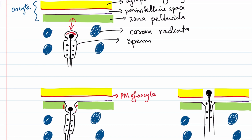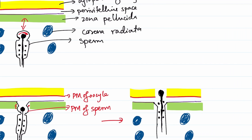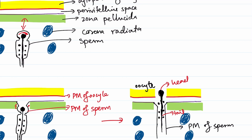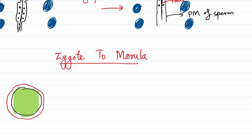The plasma membrane of the oocyte and the plasma membrane of the sperm fuse. The head end and tail end of the sperm enter inside the oocyte, while the plasma membrane of the sperm remains fused and outside. At this time, meiosis II of the secondary oocyte is completed, the ovum is released, and the head of the sperm containing the nucleus fuses with the ovum, leading to the formation of the zygote.